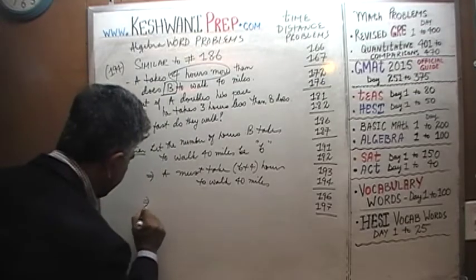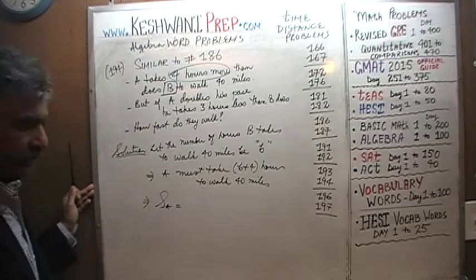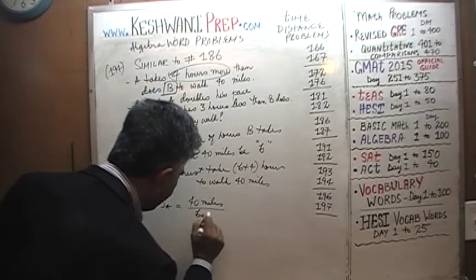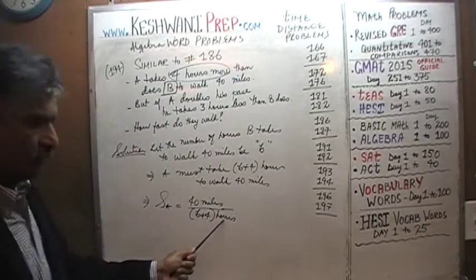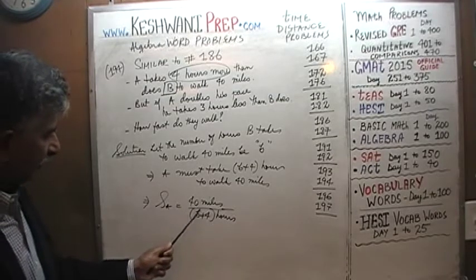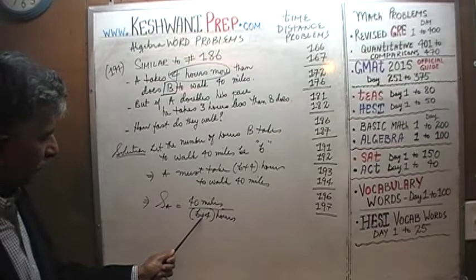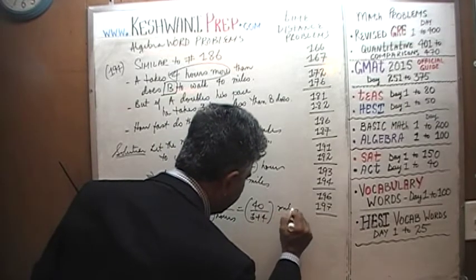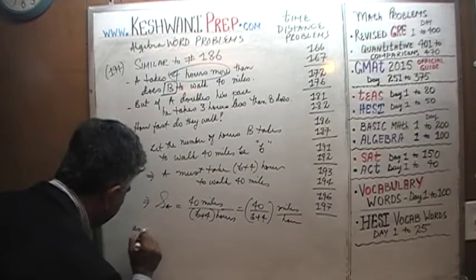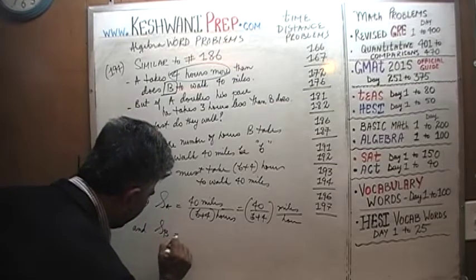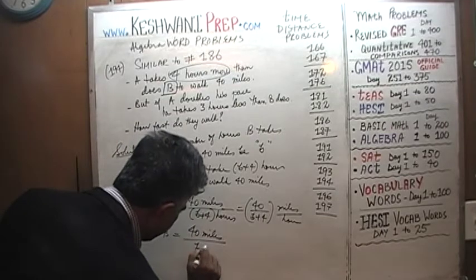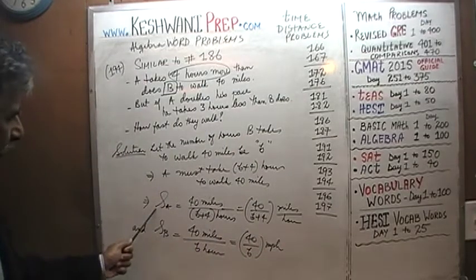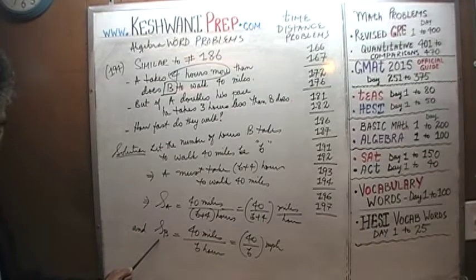This setup implies that the speed of A is 40 miles divided by (b + 4) hours, since he travels 40 miles and takes b + 4 hours. So the speed of A is 40/(b + 4) miles per hour. Similarly, the speed of B — who also travels 40 miles but takes only b hours — is 40/b miles per hour.